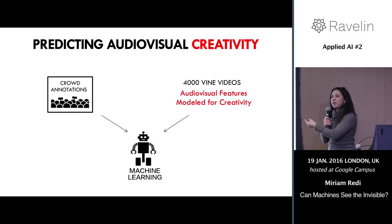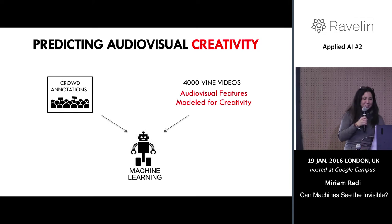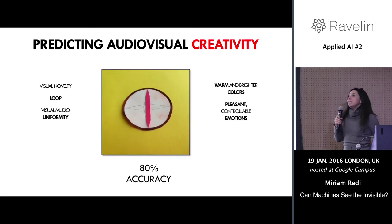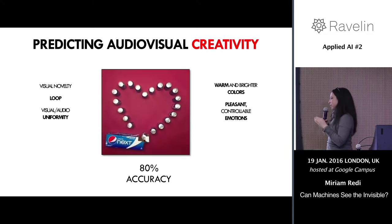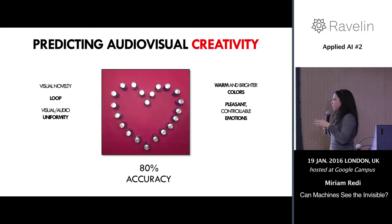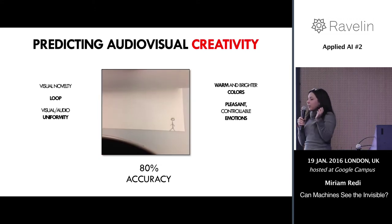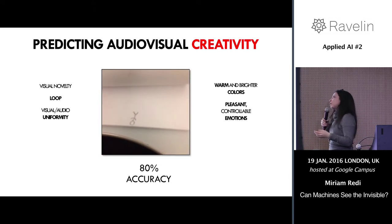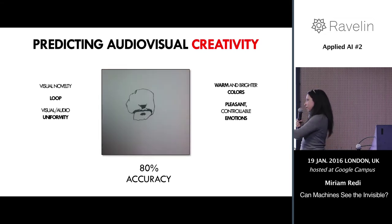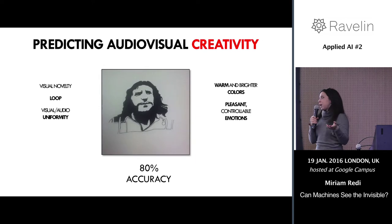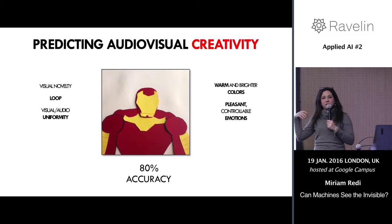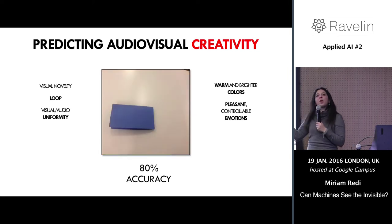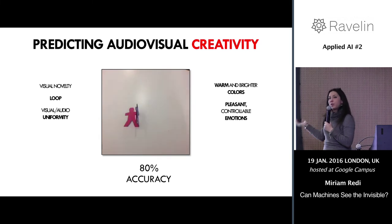Again, this data is available — please ask me if you want to see it. We were very surprised by the results: this system is able to detect the creative degree of a video with 80% accuracy. Because we focused on designing explainable features, when we look at how the machine assigns scores we can understand what makes a video creative algorithmically. For example, aspects like the visual novelty of the video, the presence of a loop, and the smoothness of surfaces positively correlate with the creative degree of a video.